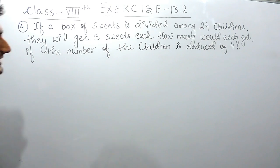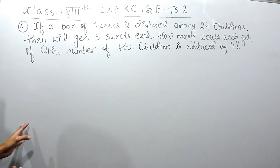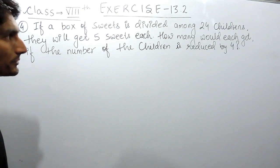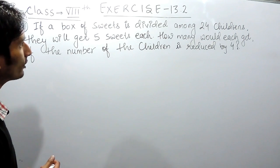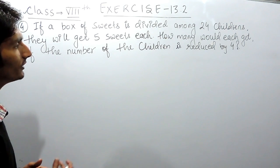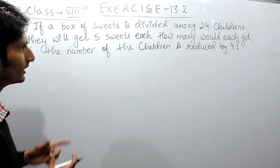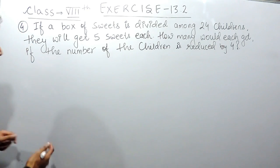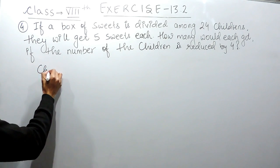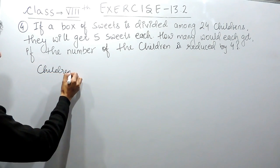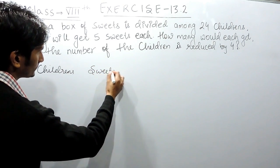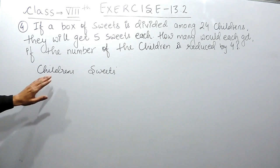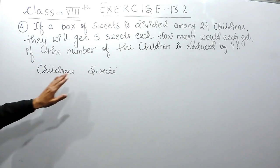Before solving these kinds of questions, first of all you have to find out whether this is a question of direct proportion or indirect proportion. To find that, you have to first find out the number of parameters — the things the question is talking about. In this question, there are two parameters: the first is children and the second is the number of sweets.